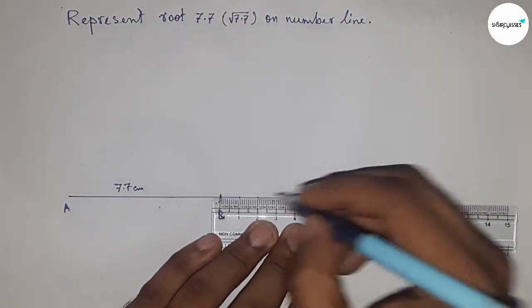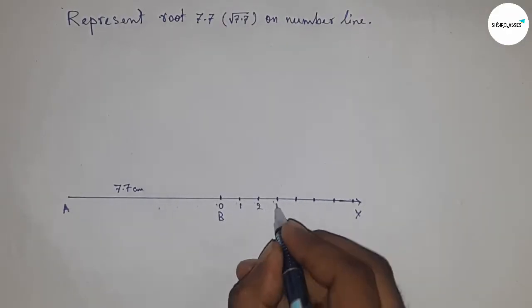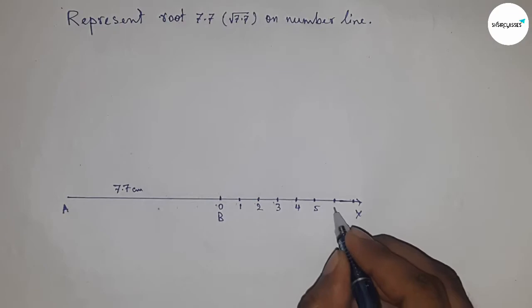Next, mark the numbers on the line from B to X using a scale. This is 0, 1, 2, 3, 4, 5, 6, and so on.